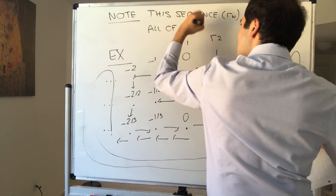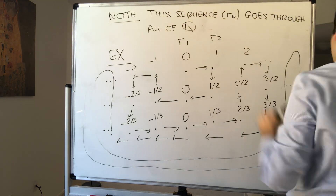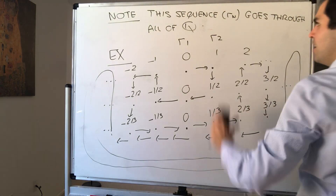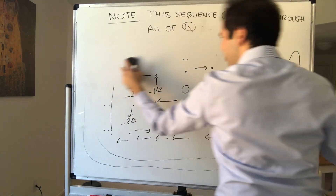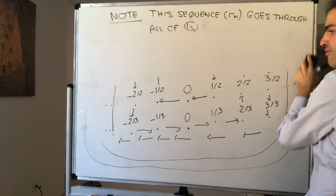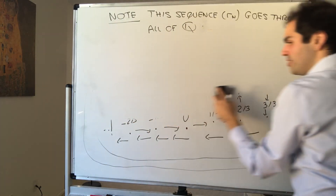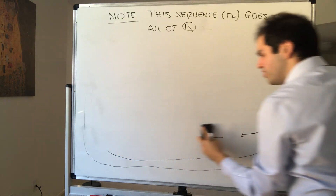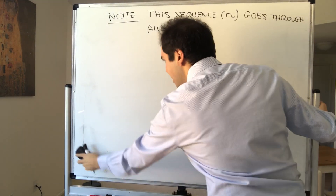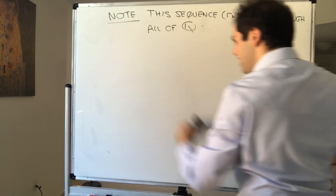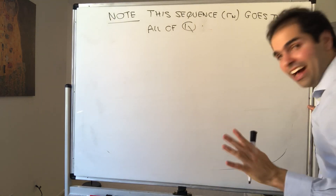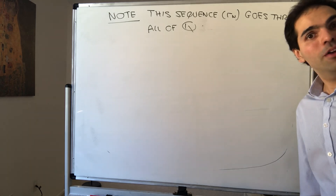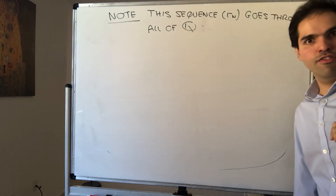In other words, every rational number is of the form r_n for some n. And now let me tell you a fact that's unbelievable, but unbelievably true.